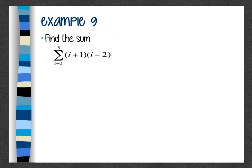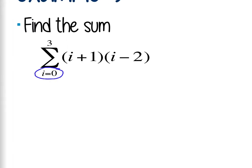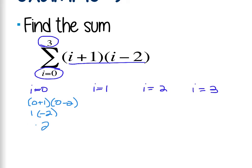So example 9 just says find the sum. So again, number at the bottom is where I start, number at the top is where I stop, and next to it is what I'm plugging it into. So I'm going to find when i is 0, when i is 1, when i is 2, and when i is 3. I'm going to take and plug them each in. So this would be 0 plus 1 times 0 minus 2, which is 1 times negative 2, or negative 2.